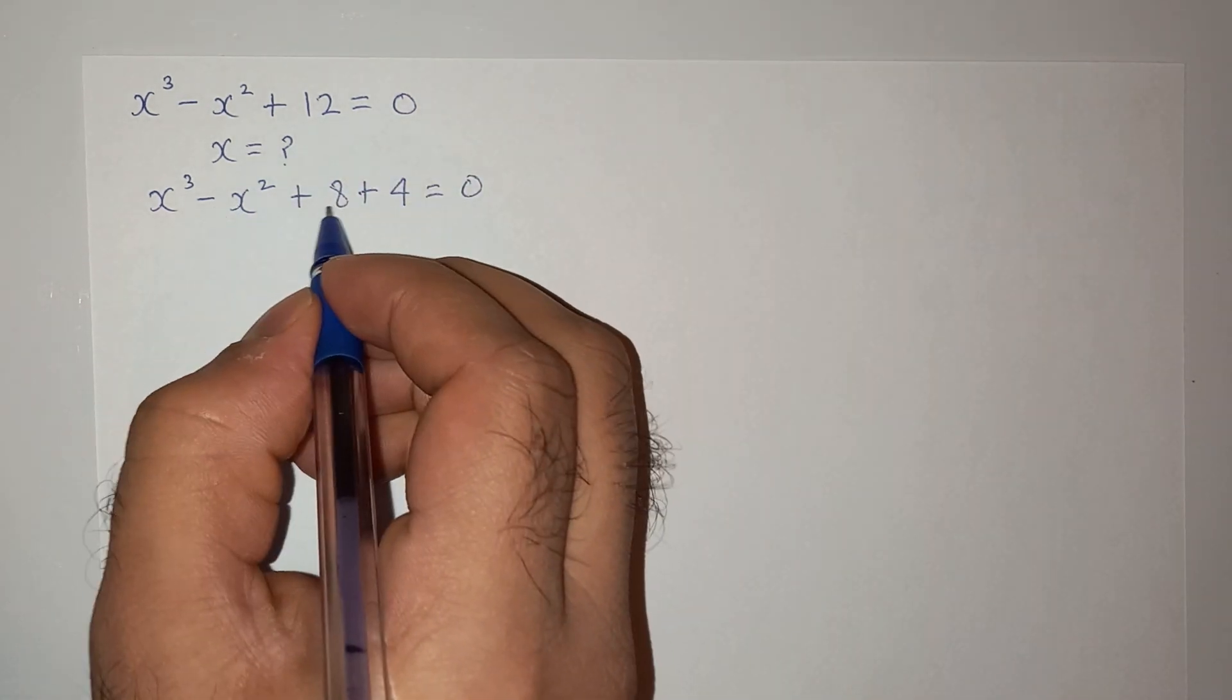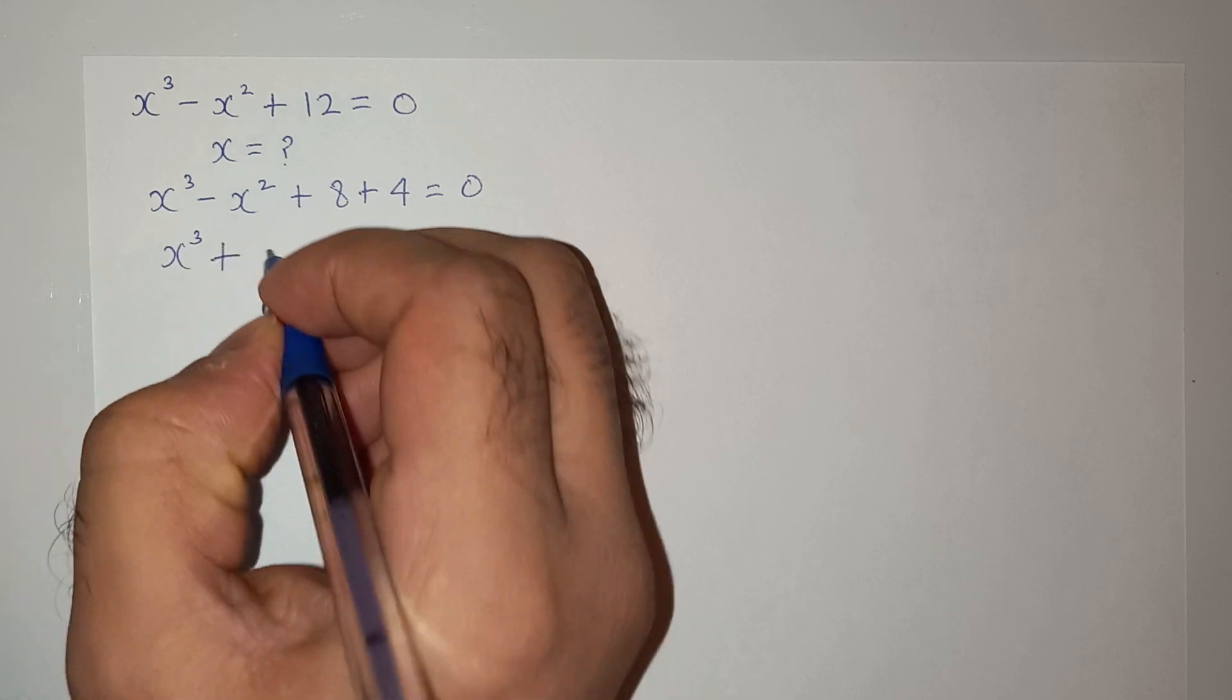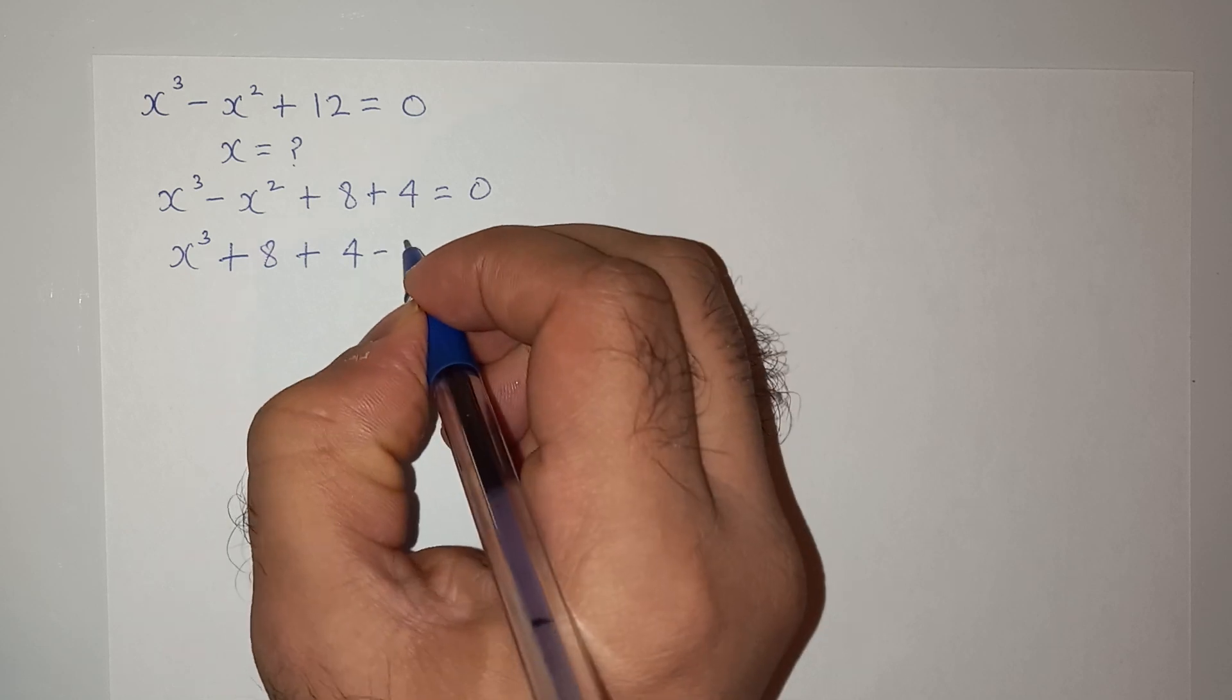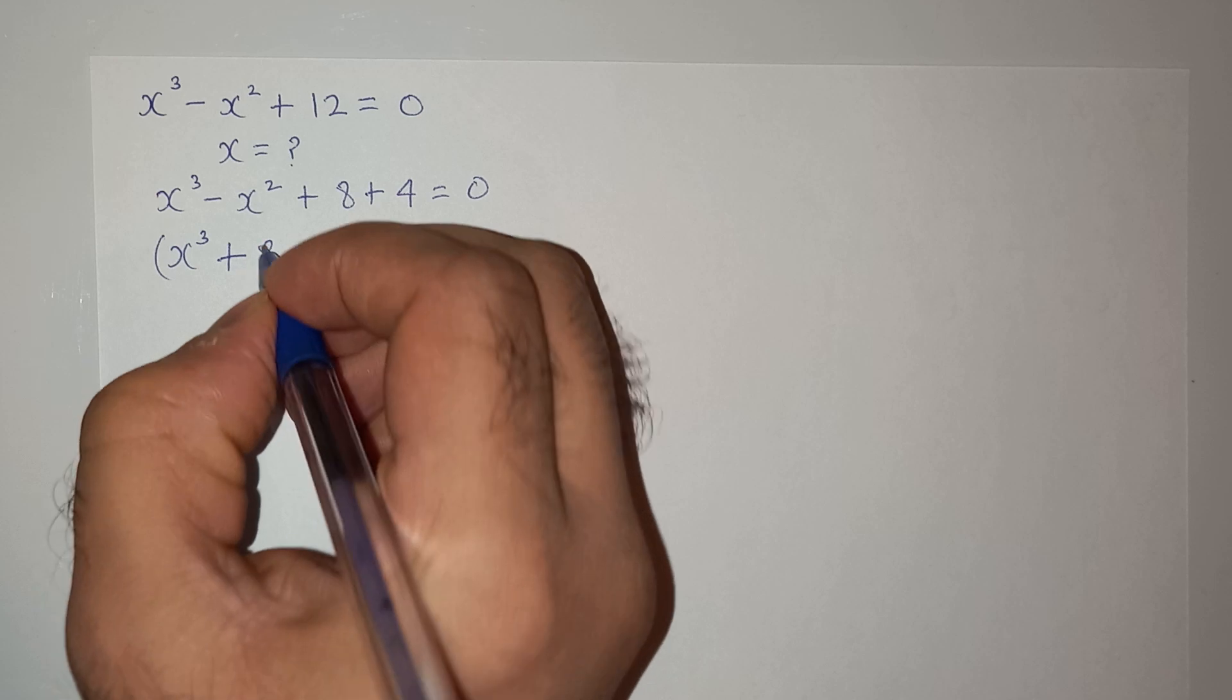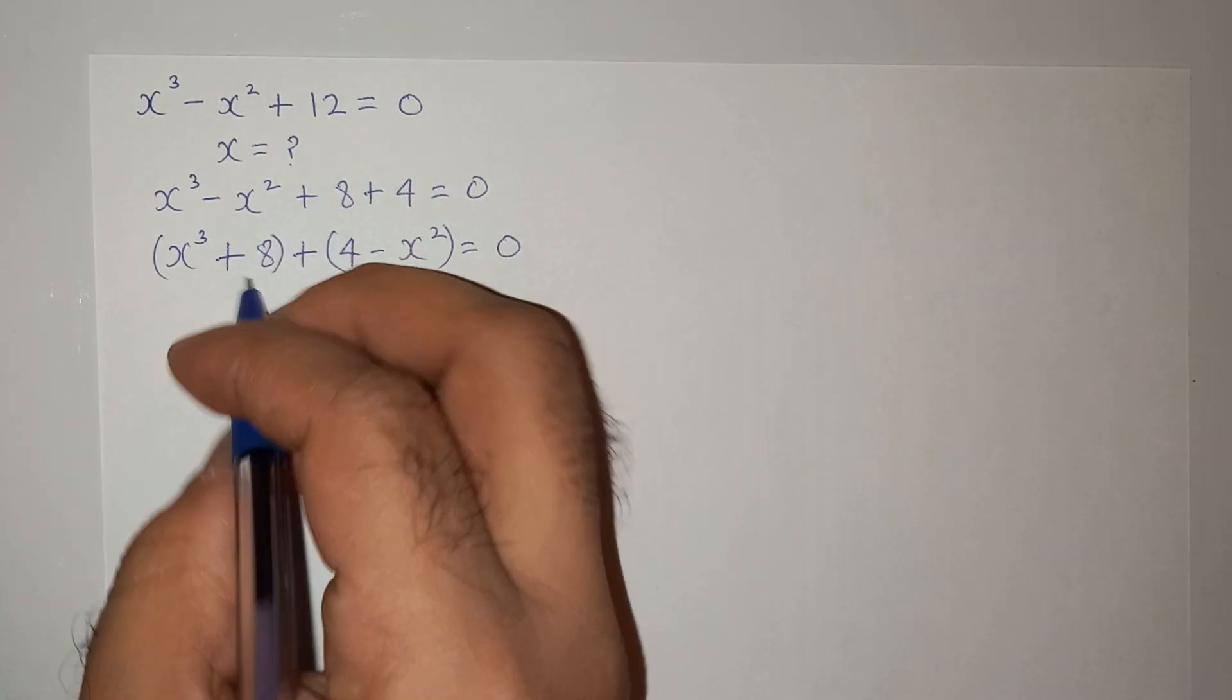Now we can rearrange it as x cubed plus 8 plus 4 minus x squared equals to 0. I will take these two terms separately and then solve it.